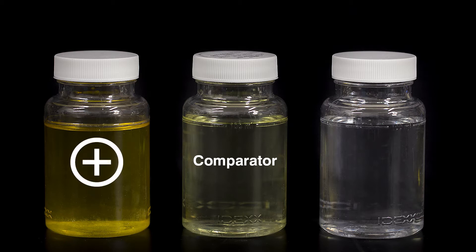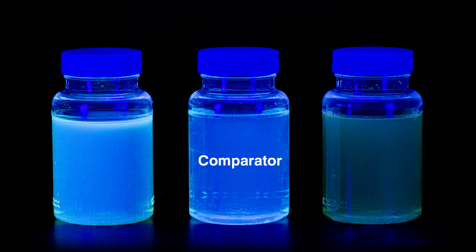If the sample is less yellow than the comparator, the sample is negative for total coliforms and E. coli. If the sample is yellow, determine E. coli results by shining an ultraviolet lamp on the sample in a dark environment,